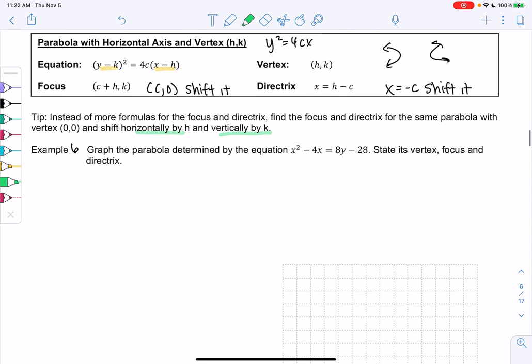All right, let's look at an example. We're going to have to complete the square again. That's going to pop up a lot in this chapter. We're going to graph the parabola determined by x² - 4x = 8y - 28. We want to find the vertex, focus, and directrix.